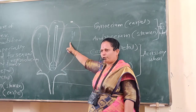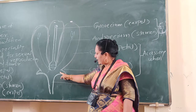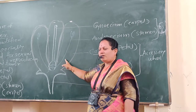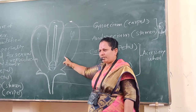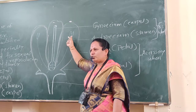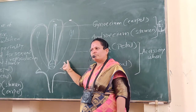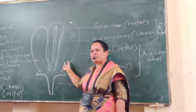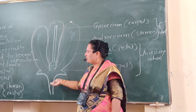Androecium is the third floral whorl. The first whorl is calyx, the second is corolla, and the third is androecium. The innermost whorl after androecium is the gynoecium. What is the function of androecium? Production of pollen grains, which are the main male reproductive structures.